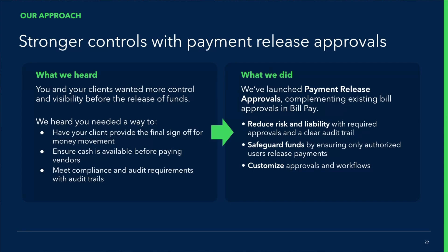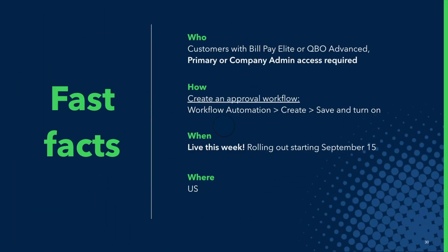And finally, it is highly customizable. Now for the fast facts — who is this for? This is for businesses that are on BillPay Elite or QuickBooks Advanced. It has to be a primary or company admin who can set up this workflow. How do they set it up? They go into workflow automation and create the approval workflow, then save and turn it on. When is this going live? It is already live — we launched it this week. And where? This is live in the US only.